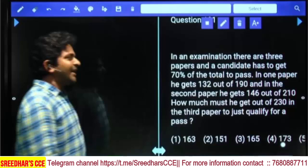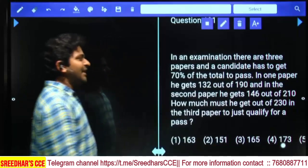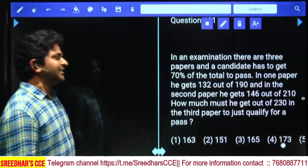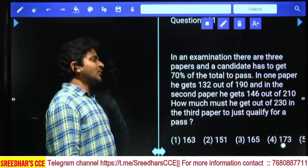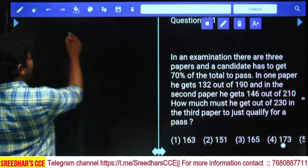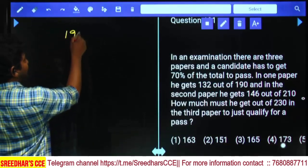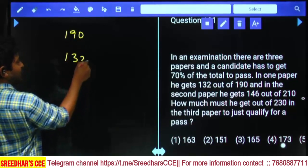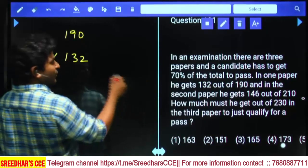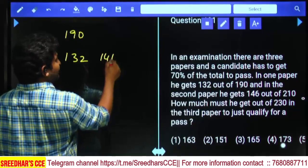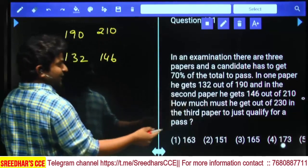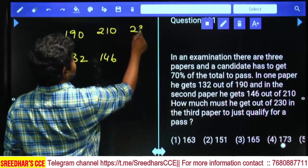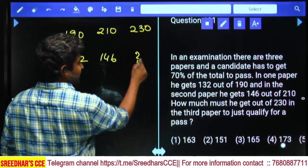In an examination there are 3 papers and a candidate has to get 70% of the total to pass. In one paper he gets 132 out of 190, and he gets 146 out of 210. How much should he get out of 230 marks in the third paper to pass?